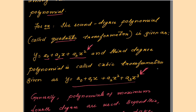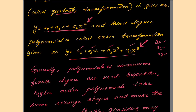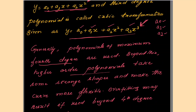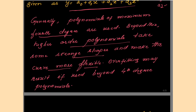In all previous regression methods, you have been computing coefficients a₀, a₁, a₂, and so on. For a quadratic equation you compute a₀, a₁, and a₂; for a cubic you also compute a₃. As the degree increases, the number of coefficients also increases. Generally, we go for a maximum of fourth degree, because higher order polynomials take strange shapes and make the curve more flexible. Overfitting may result if used beyond the fourth degree.